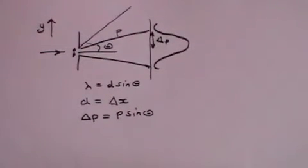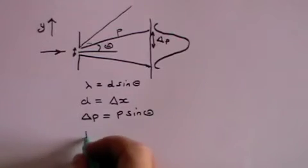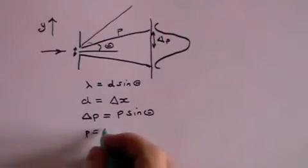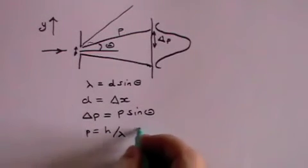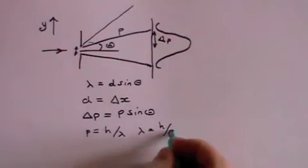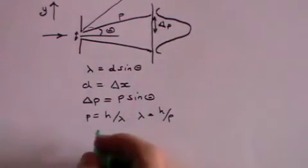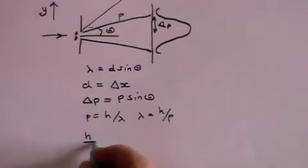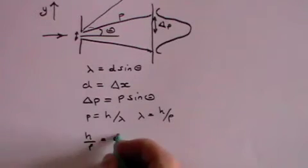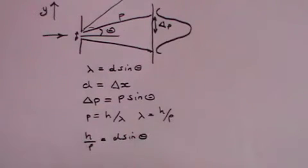But we know and have just shown that p equals h over lambda. Or you could write that as lambda equals h over p. And so using this formula here, lambda, which is h over p equals d sine theta, which means h equals d p sine theta.